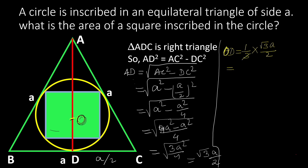OD equals one-third of √3A/2. Simplifying, the √3 cancels, giving OD = A/(2√3). This is OD. Now OD is the radius of this circle, and also OD is half of the diagonal of this square.